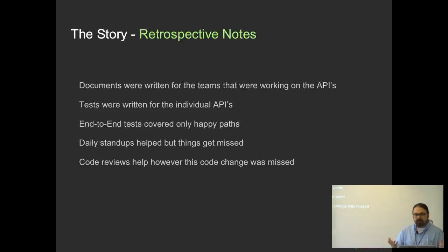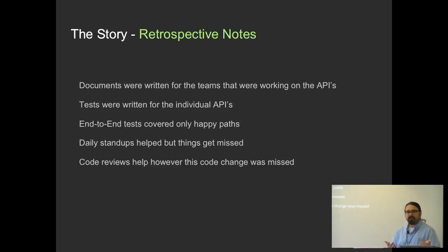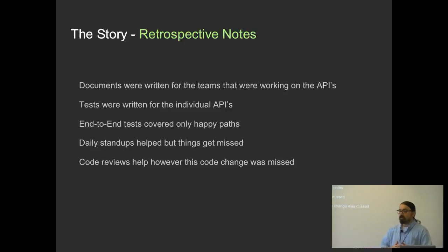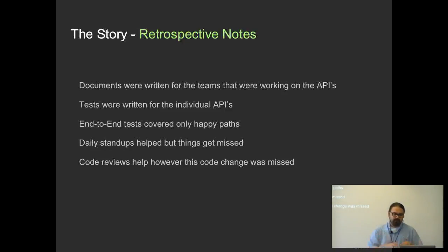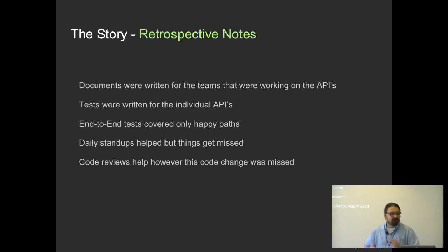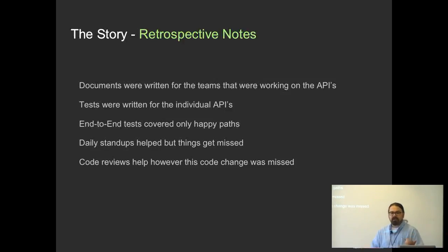They were concerned because the end-to-end tests only covered happy paths. The reason was that end-to-end tests took a long time to run, so they limited them to happy paths — if they included everything, it would take too much time. They also noted that no one communicated this particular change during daily stand-ups, so it got missed.